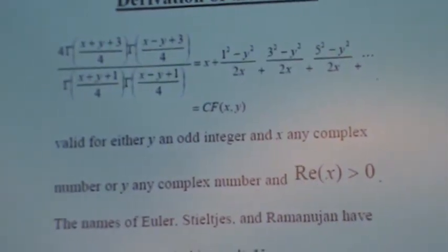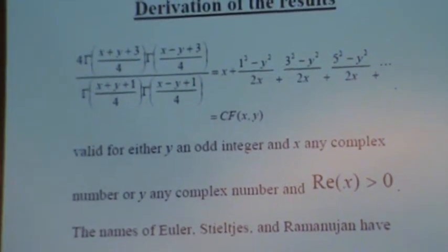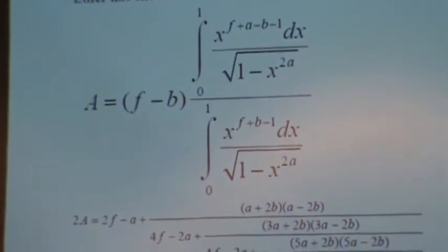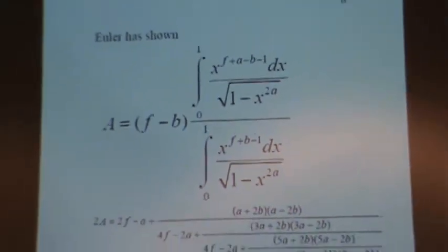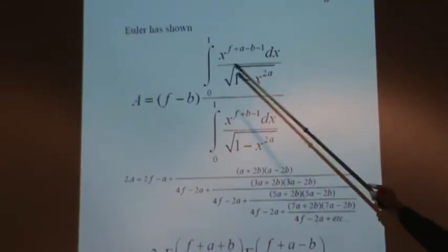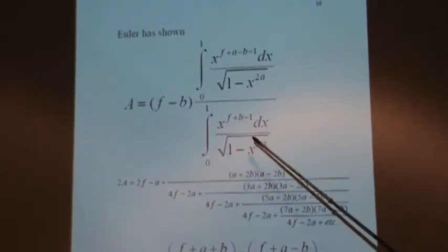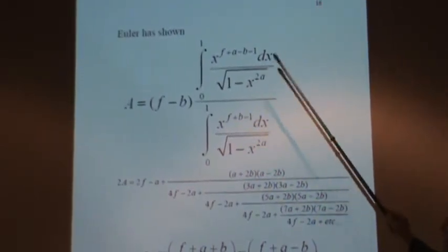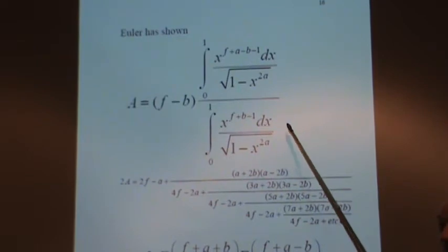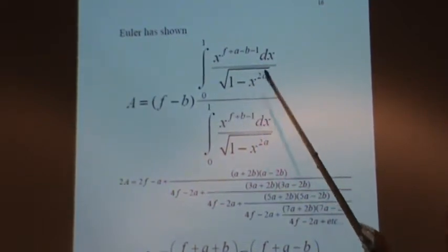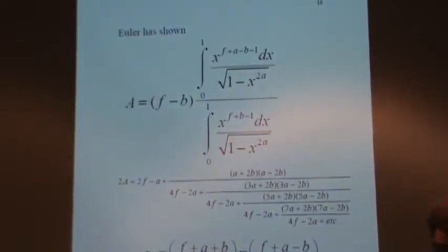But he didn't write it in exactly the form. He wrote it like this. Instead of 4 gamma functions, he has two integrals. Now, these integrals, with a simple change of variable, become beta integrals.